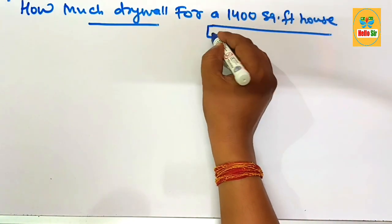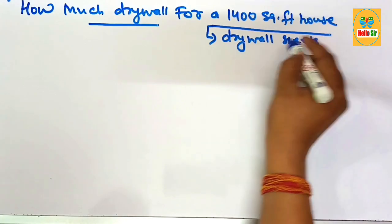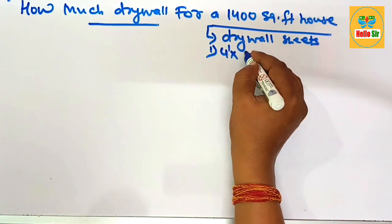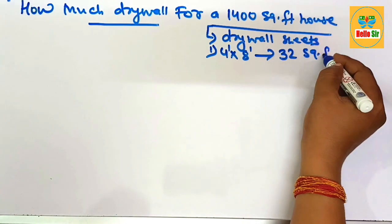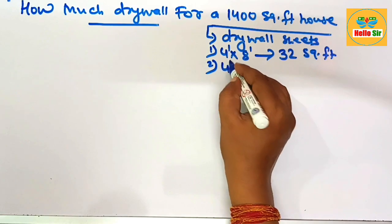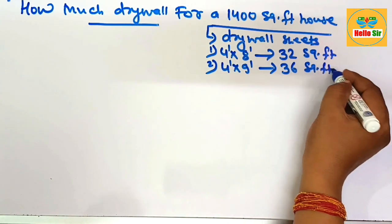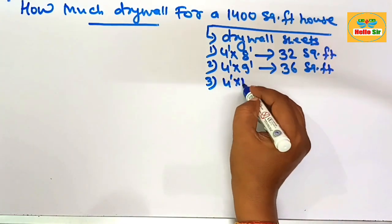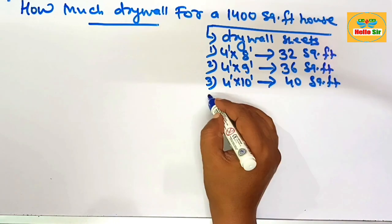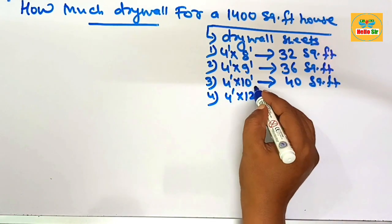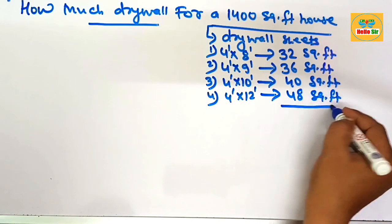Drywall sheets come in many options. The first option is four foot by eight foot, which has an area of about 32 square feet. The second option is four foot by nine foot, with an area of about 36 square feet. The third option is four foot by ten foot, with an area of about 40 square feet. The last option is four foot by twelve foot, with an area of about 48 square feet.